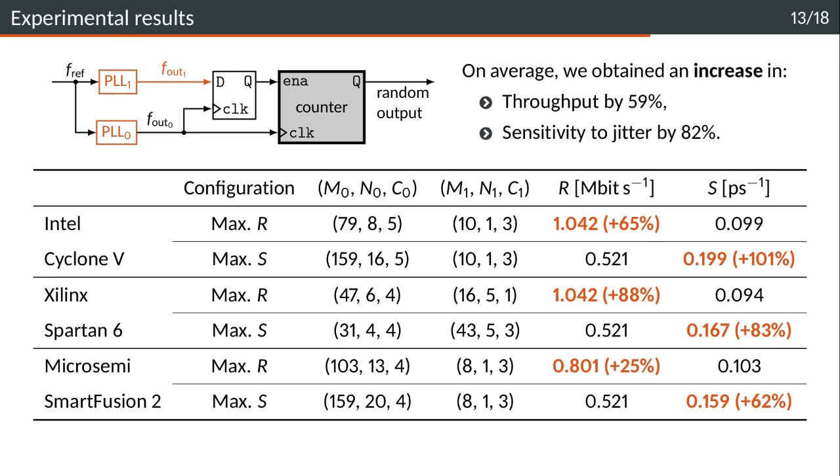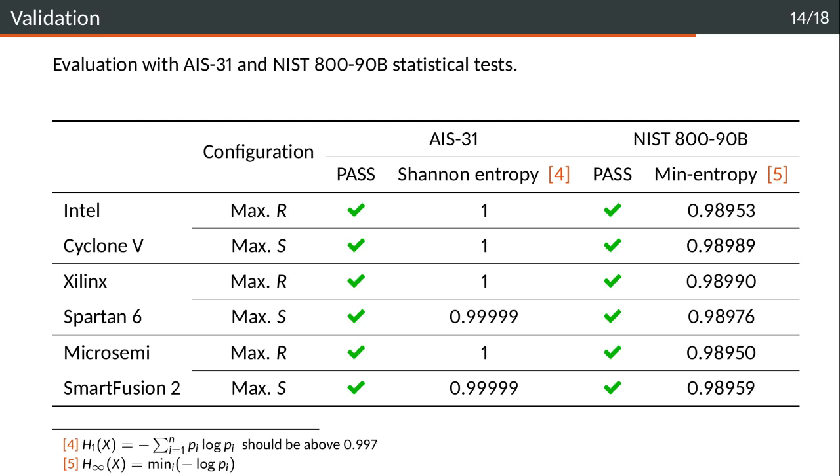We did experiments on three FPGA families: Intel Cyclone 5, Xilinx Spartan 6, and Microsemi SmartFusion 2. For each of them, we take a configuration with maximum throughput and a configuration with maximum sensitivity to jitter. And for each of them, we get an increase in throughput or sensitivity to jitter, respectively.